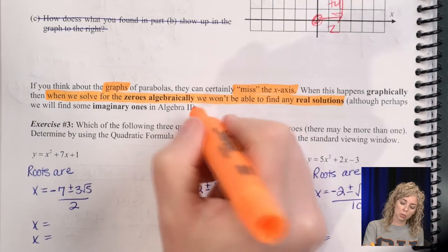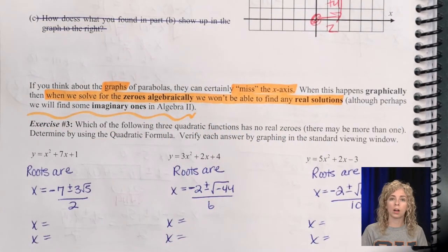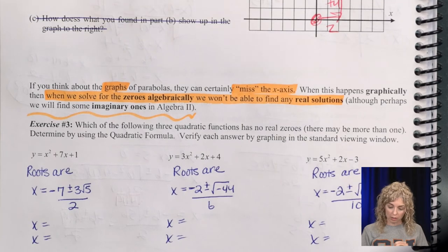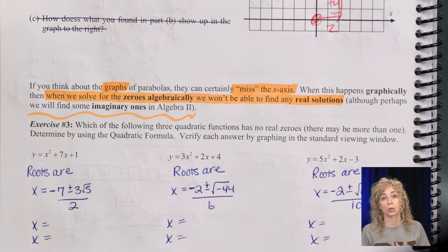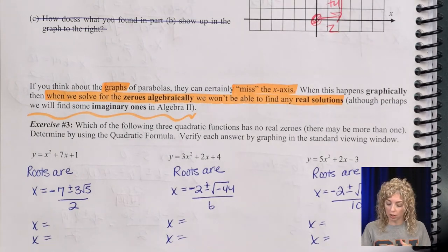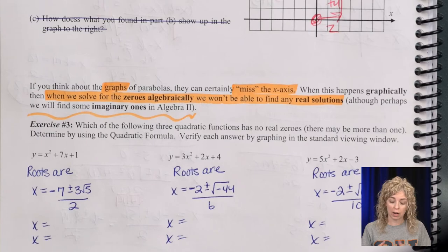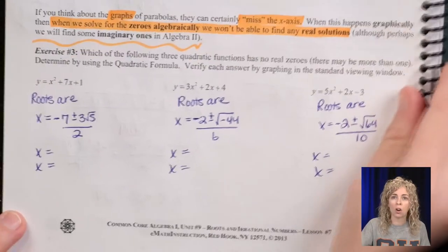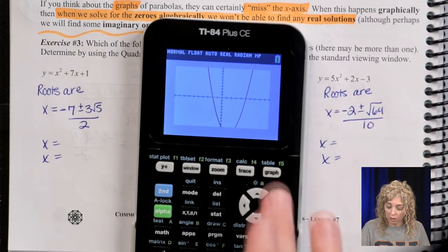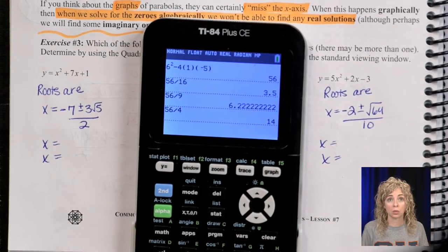And when it doesn't cross the x-axis, when we graph it, when we look at those solutions algebraically, we won't be able to find any real solutions. Next year in algebra 2, you'll see the called imaginary ones. So what I did below is, it says which of the following 3 quadratic functions has no real solution, so we need to determine. But we're also going to determine in our notes if the roots are rational or irrational. So I solved all of these using the quadratic formula.